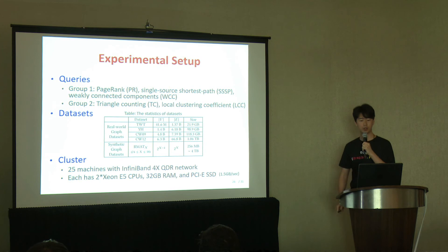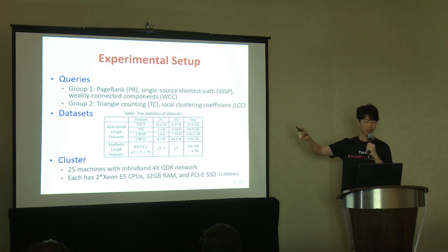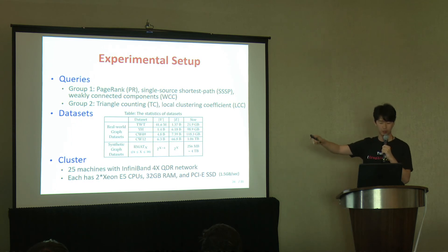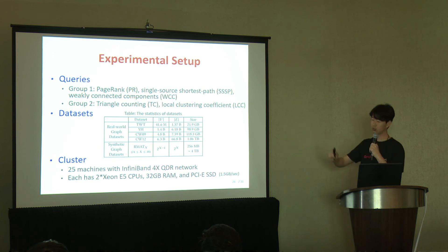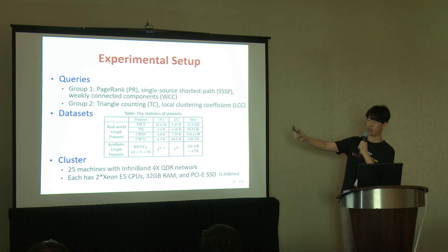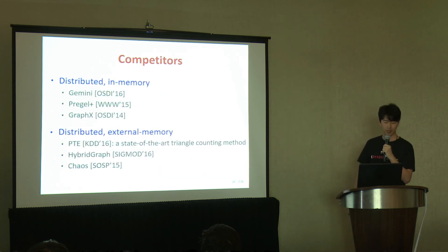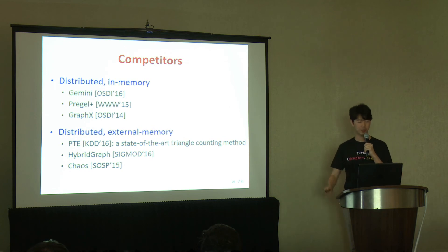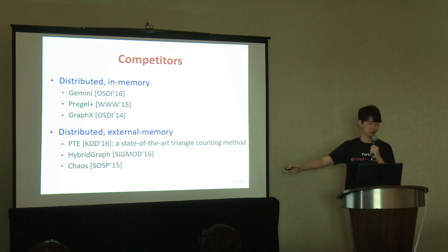For our experimental setup, we use two groups of queries. For group 1 where k=1, we use PageRank, single-source shortest path, and weakly connected components. For group 2 where k=2, we use triangle counting and local clustering coefficient. We use both in-memory and external memory systems as competitors to evaluate both efficiency and scalability. Note that PTE is a state-of-the-art triangle counting method on MapReduce, not a general graph analytics system.